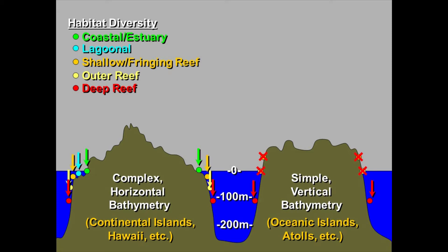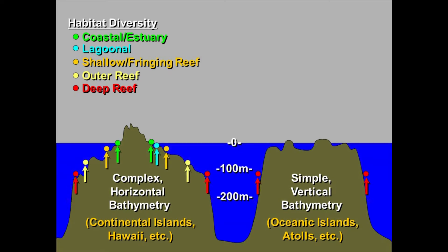As sea level continues to drop, habitats still persist in areas with complex horizontal sloped bathymetry, but more and more the shallow habitats disappear along with the organisms in those shallow reef environments. But you'll notice those red dots on those vertical drops and steep slopes are much less severely impacted — they simply migrate up and down the reef slope. As sea level rises again and restores those habitats on oceanic islands, over time species gradually recolonize from areas where they were able to persist across the sea level change.